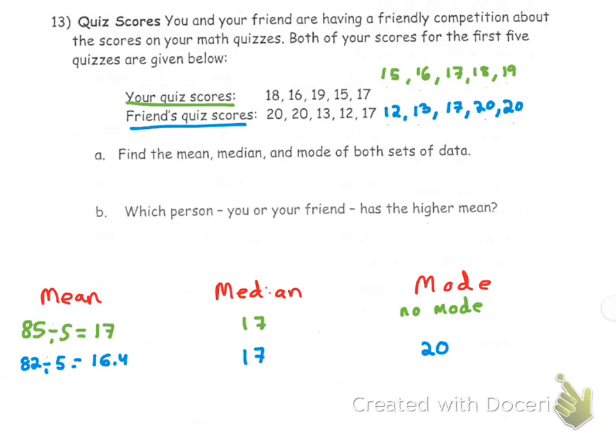Okay, so the answer to part B, which asks which person, you or your friend, has the higher mean, is you. You have the higher mean. So you have your mean, median, and modes for both of you, and you had the overall better mean.